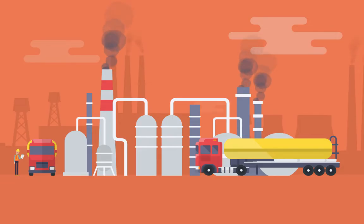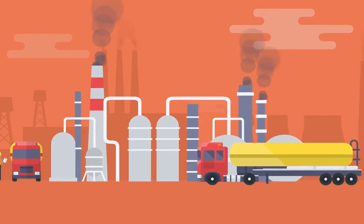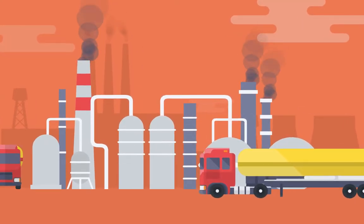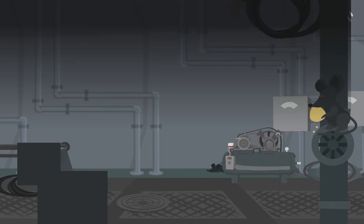9.2. Promote inclusive and sustainable industrialization and, by 2030, significantly raise industry's share of employment and gross domestic product in line with national circumstances and double its share in least developed countries.